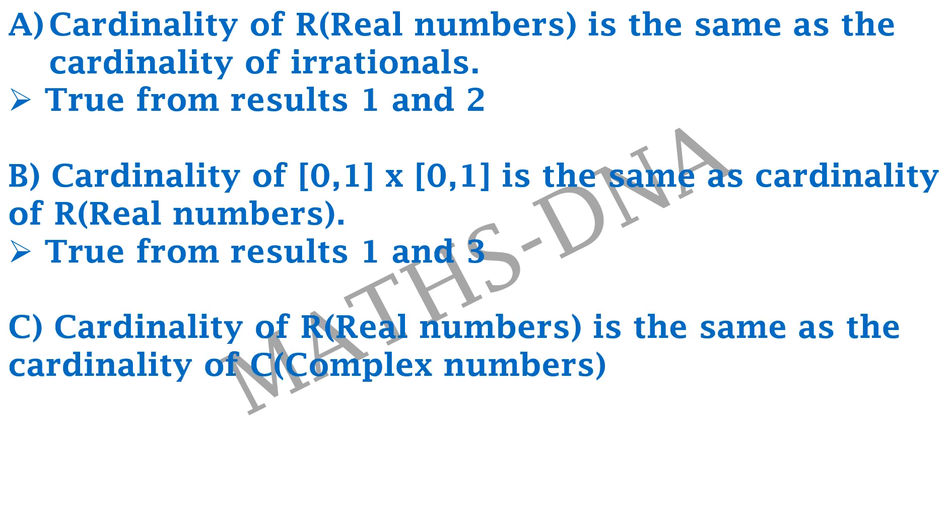The third one, that is, cardinality of real numbers is same as the cardinality of complex numbers. Now, we know the complex numbers are in the format of z = x + iy, where x and y belongs to R. So, the set of complex numbers C will be in the form of R × R, which will be nothing but again, continuum cross continuum and that will give you again, continuum. So, the cardinality of complex numbers is again continuum and hence,